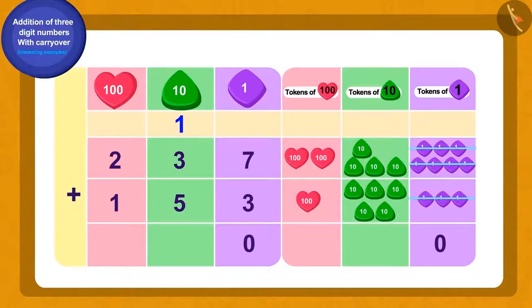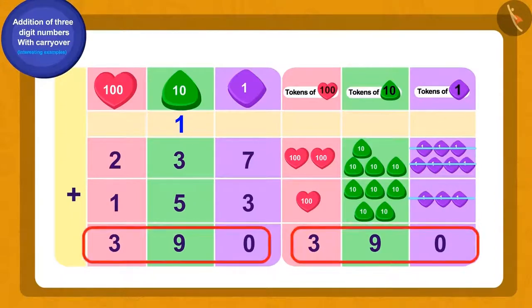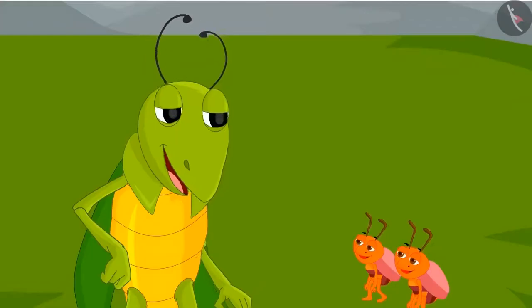If we add all the numbers written in the 10-digit place, what will we get? 9. Now, at the end, if we add all 100-digit place numbers, we will get 3. Thus, there were a total of 390 animals in the herd.